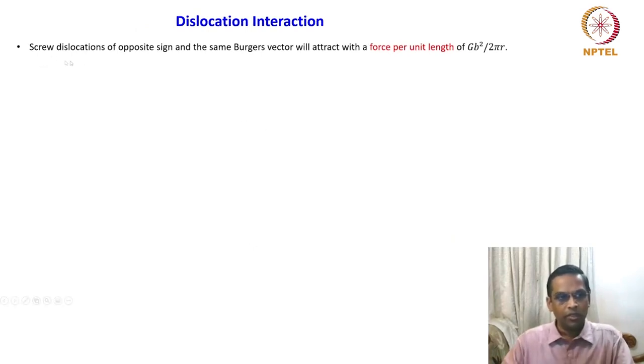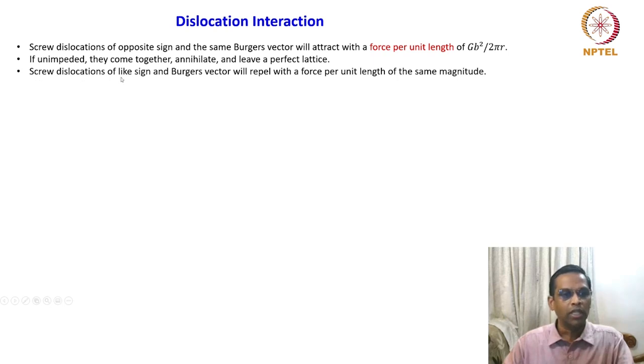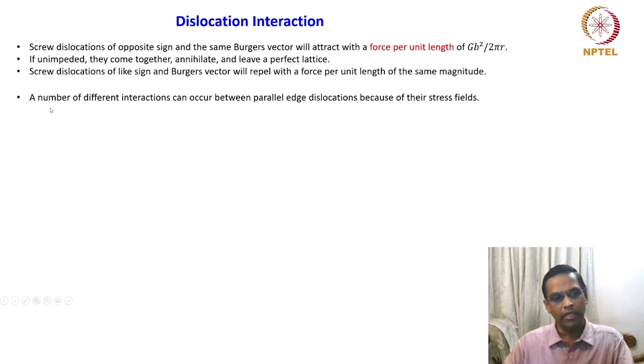We have already seen that screw dislocations of opposite sign and the same Burgers vectors will attract with a force per unit length of Gb²/(2πr). If unimpeded, they come together, annihilate, and leave a perfect lattice. Screw dislocations of like sign and Burgers vector will repel with the force per unit length of the same magnitude. With this background, we can think of a number of different interactions that can occur between parallel edge dislocations because of their stress fields.